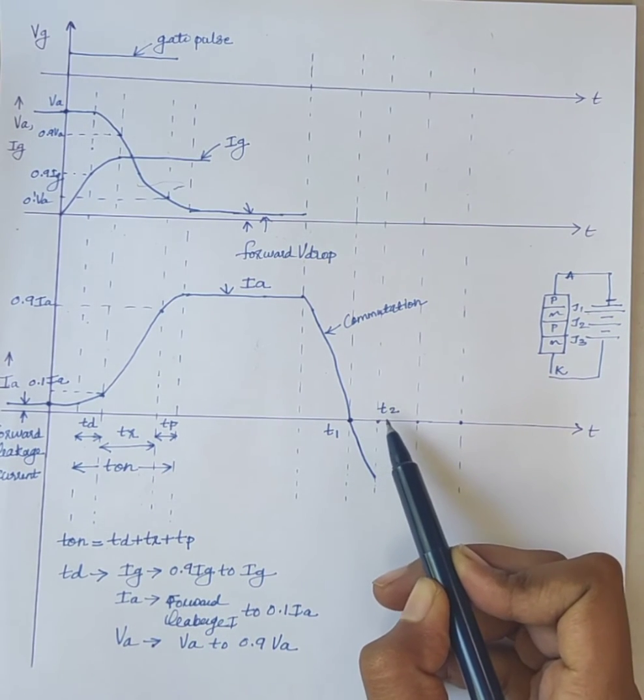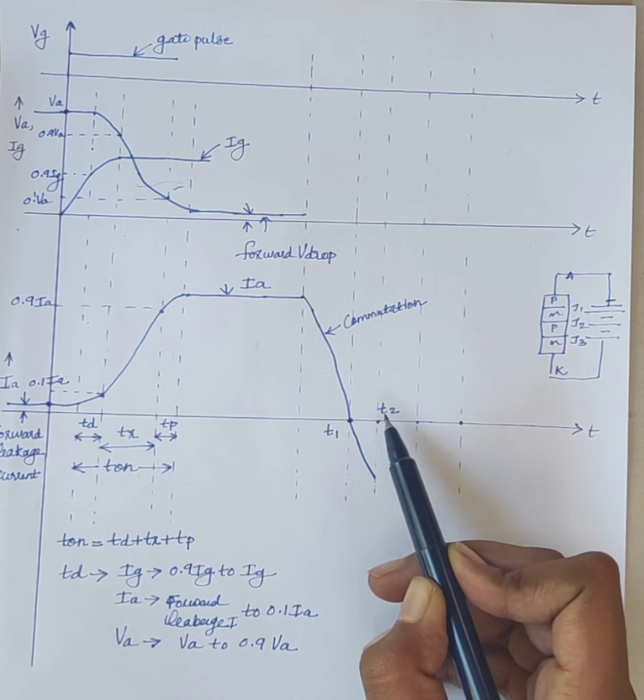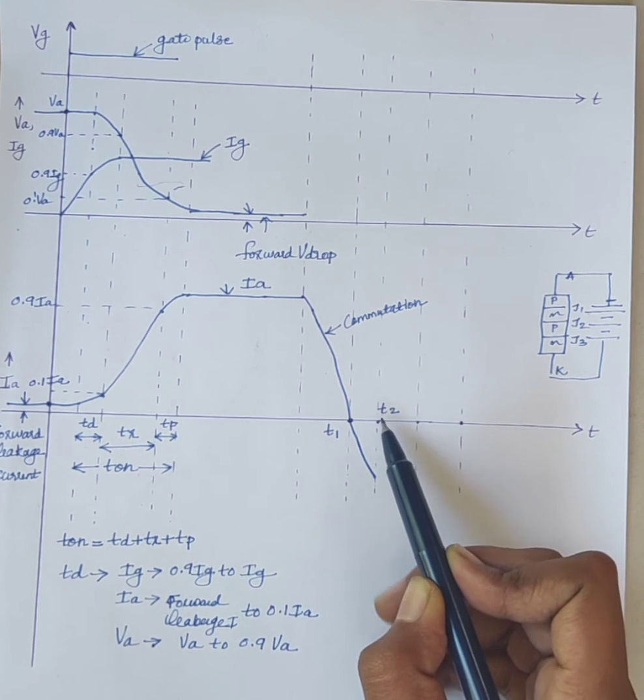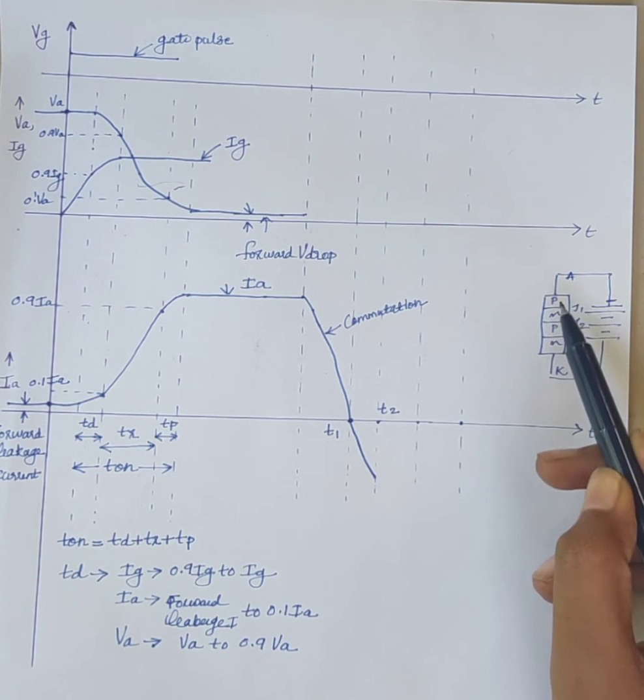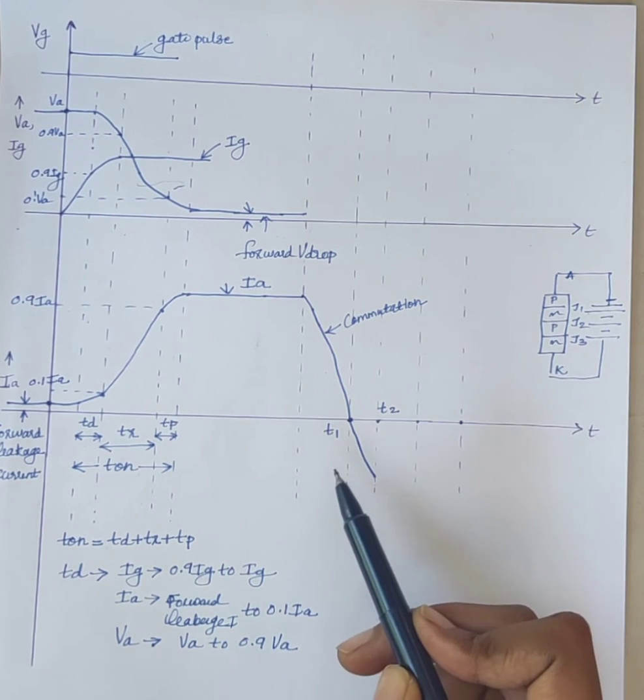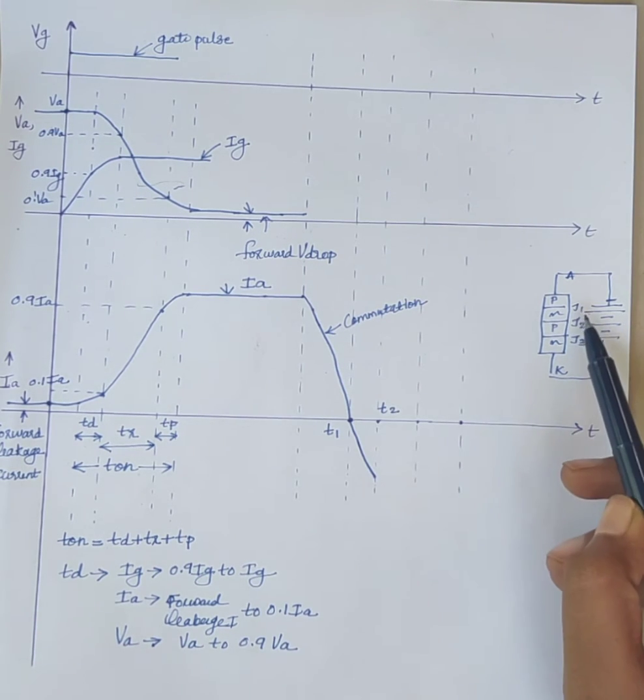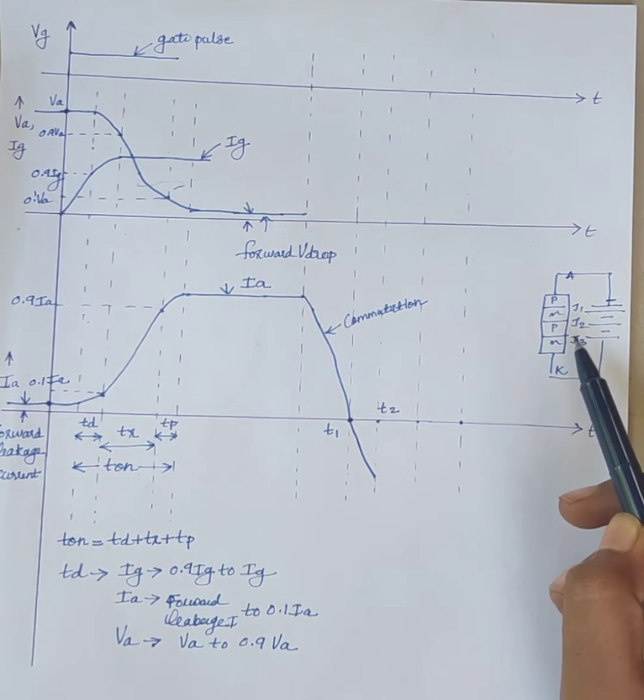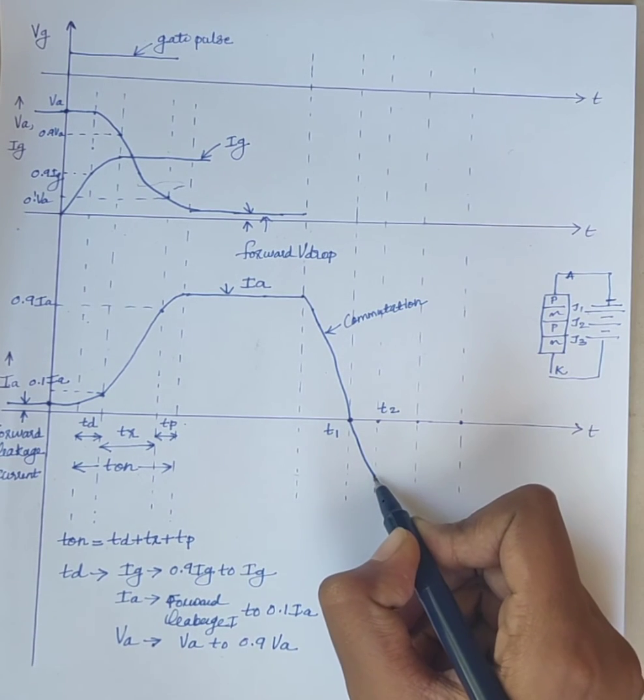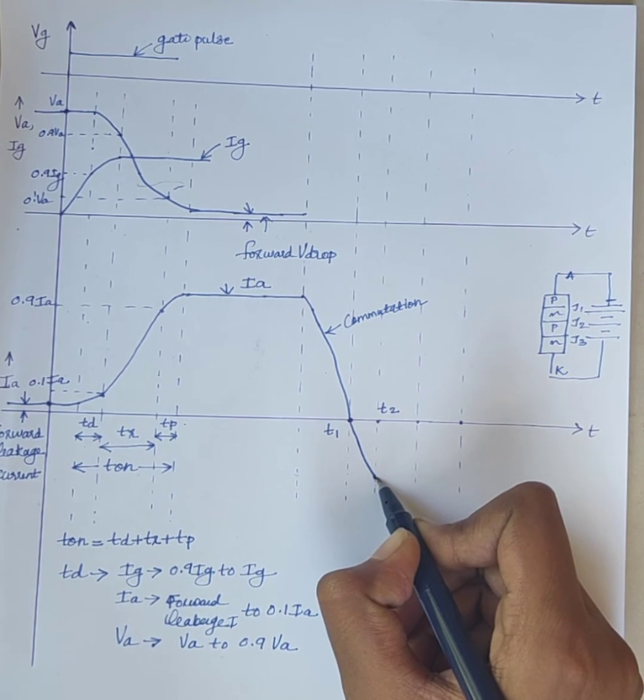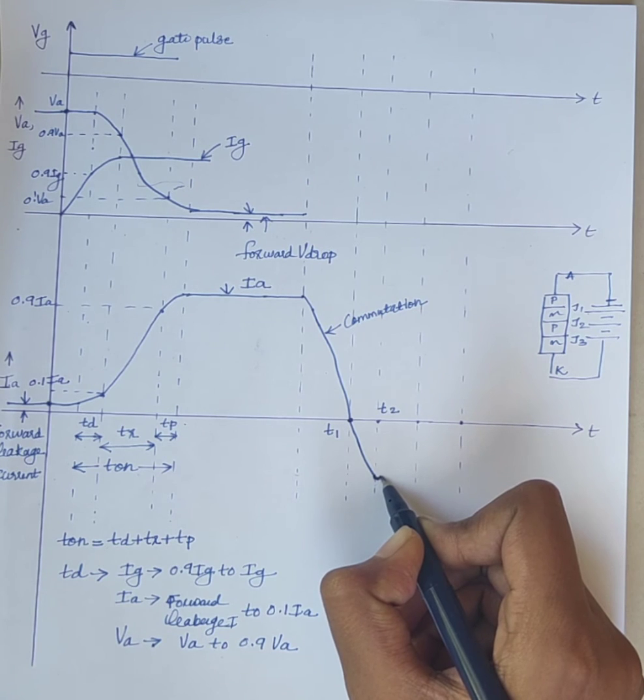At instant T2, about 60 percent of charge carriers are removed from the outer P and N layers. The carrier density across the junction J1 and J3 begins to decrease. And with this, anode current also starts decaying.